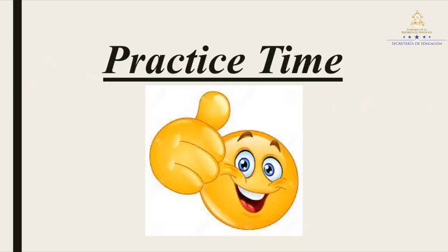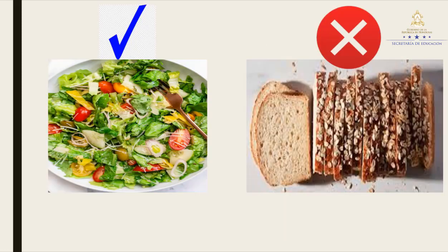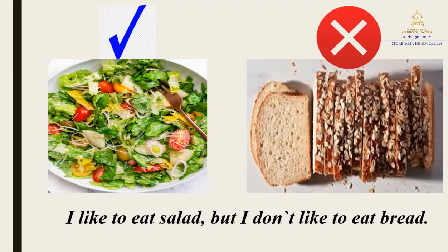Now we are going to practice, okay? It is practice time. Pay close attention to the exercise. As you can see, we have two different pictures. Tell me, what is the first one? Salad. That's good. And the second one? Bread. Amazing. So we are going to create a sentence using both words — salad and bread. Think of a sentence using like and dislike. Excellent. The answer is: I like to eat salad, but I don't like to eat bread. Repeat after me: I like to eat salad, but I don't like to eat bread.